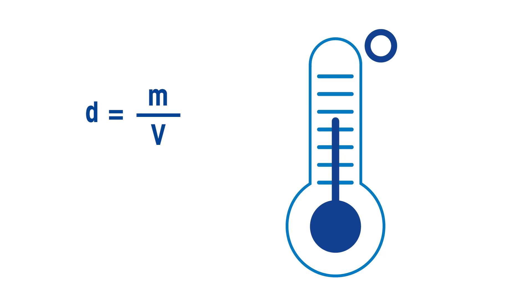Since density equals mass divided by volume, when the volume of a liquid increases, the density decreases. So the higher the temperature, the higher the volume and the lower the density. This means that the density of a sample must always be given with the temperature at which it was measured. Temperature has an important influence on density.